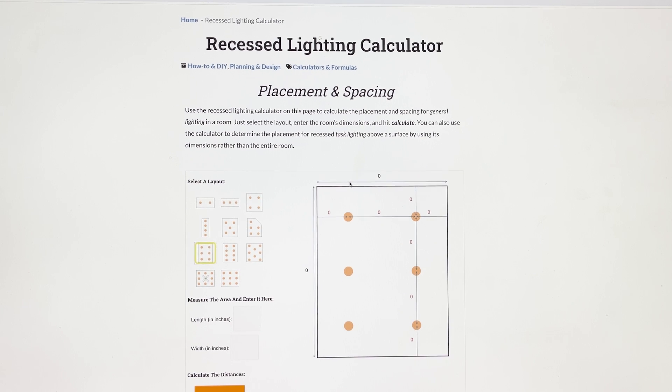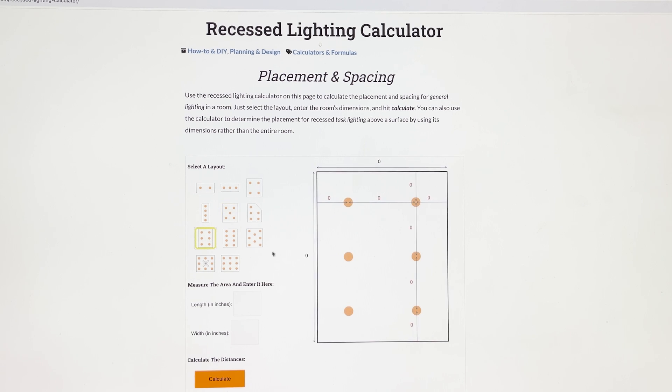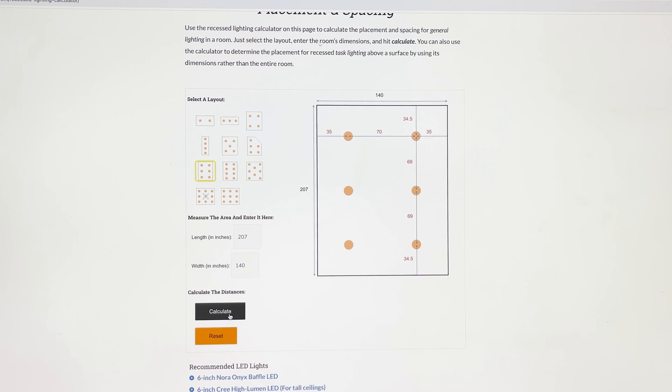Check this thing out from recesslighting.com. I'll include a link to this website in the description for anyone that wants to ditch the math and get down to business. Scroll down and select your lighting layout and then punch in your room dimensions and hit calculate. Boom, it's done for you. Yes, we're living in the future.